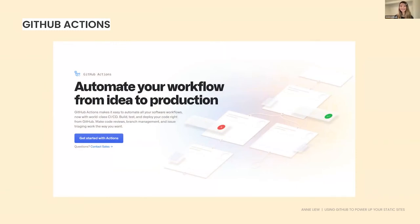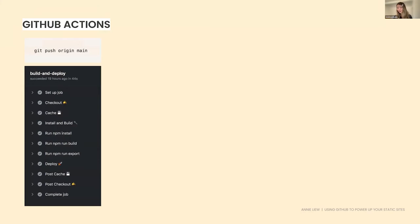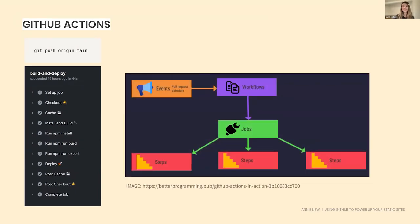GitHub Actions are a way for you to automate the tedious, manual, repetitive tasks you have to do as a developer. Imagine deploying a static site by just typing git push origin main, and a few minutes later it's on GitHub Pages — without having to switch branches, install dependencies, build a static site, commit, push, and so on. By typing just those four words, here's a list of all the things you didn't have to do. That's really cool. Important concepts to understand are events, workflows, jobs, and steps.